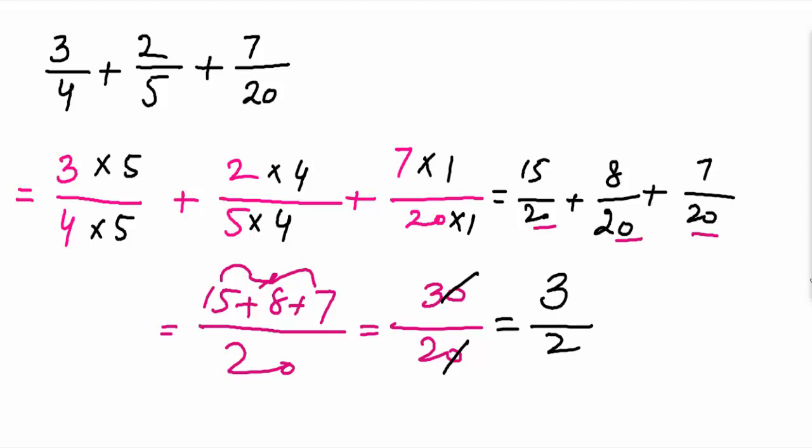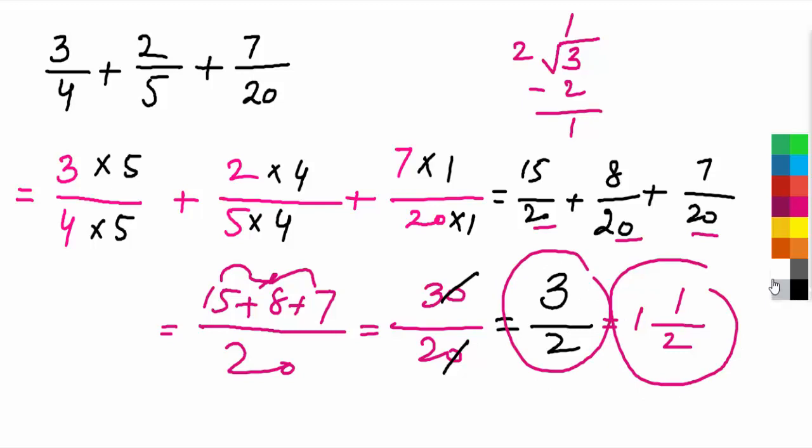Furthermore, if you want to get the answer in composite or mixed fraction, then you can have 3 divided by 2: 2 ones are 2, remainder 1, and the answer will be 1 whole 1 over 2. This is the mixed fraction, this is the fraction, and this is the simplification of this fraction.